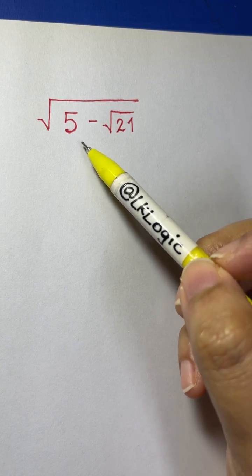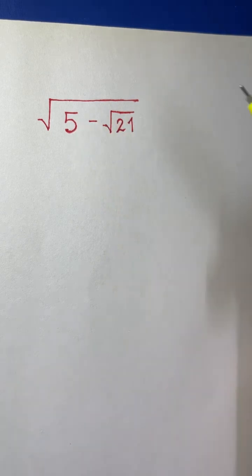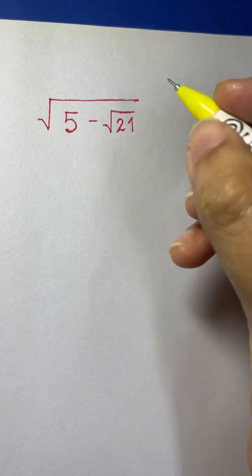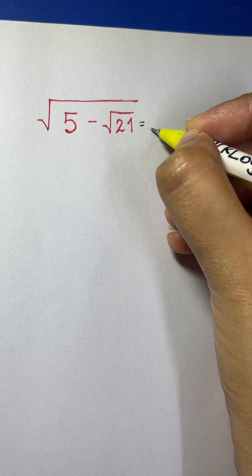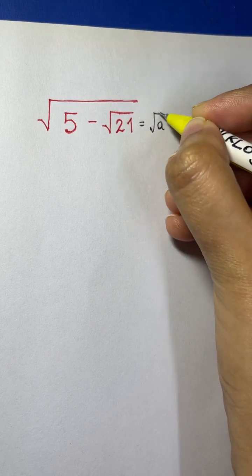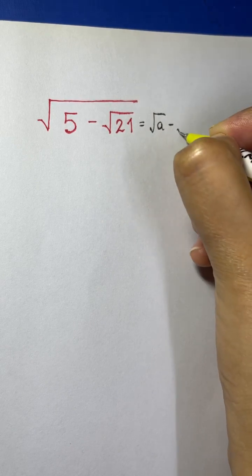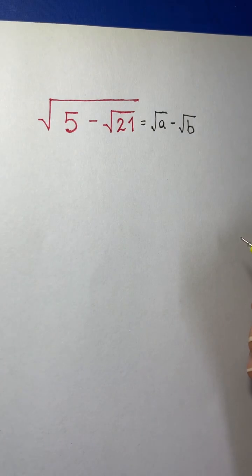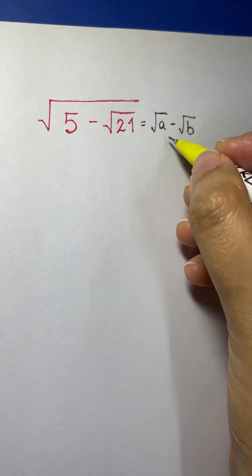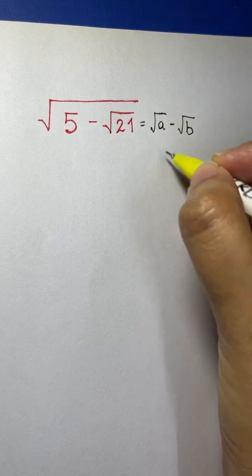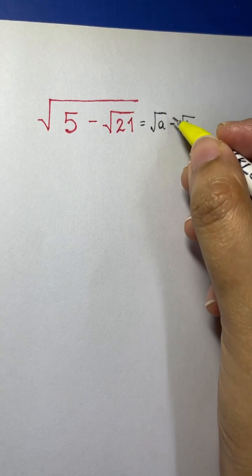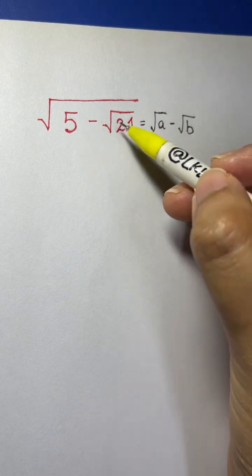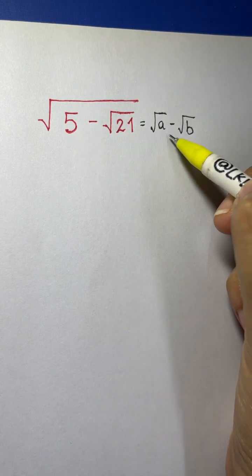Let's think about what the result should look like. Of course, the result should look like square root of a minus square root of b. We need to find the values of a and b. Let's regard this as an equation — on the left hand side we have two square roots, and on the right hand side we have a and b.